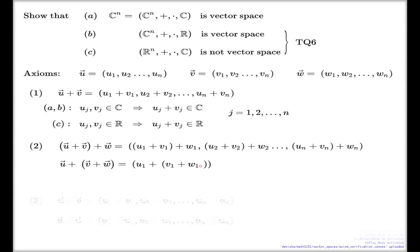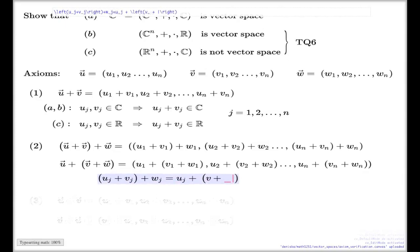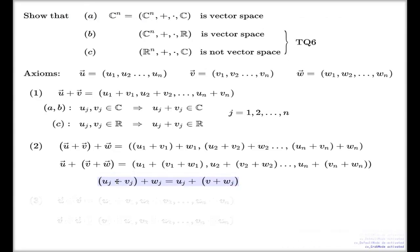Again, I do the same operations on the components, on the first component, on the second component, and on the last component. How do we know that this one equals this one? We know it because the same relation is true for numbers itself. We know it because (U_j + V_j) + W_j equals U_j + (V_j + W_j) and that is true in the number case.